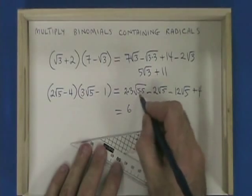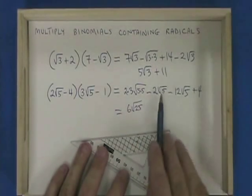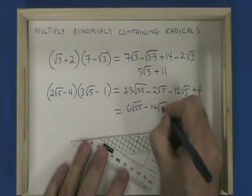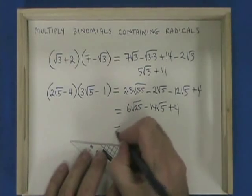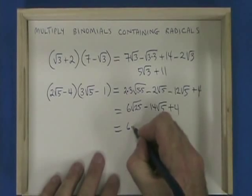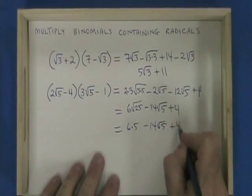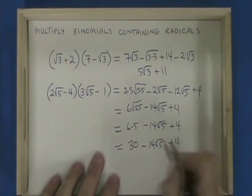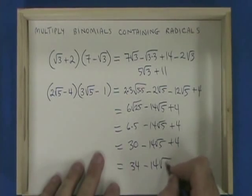2 times 3 is 6, and 5 times 5 is 25, so I have 6 root 25. Minus 2 root 5 minus 12 root 5 is minus 14 root 5, and I have plus 4. The square root of 25 is 5, so I have 6 times 5 minus 14 root 5 plus 4. 6 times 5 is 30, and my final answer is 34 minus 14 root 5.